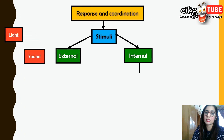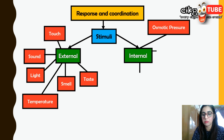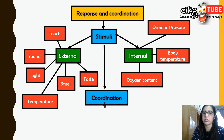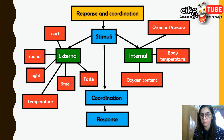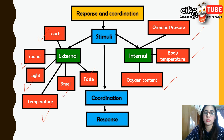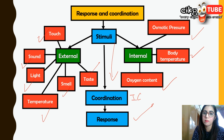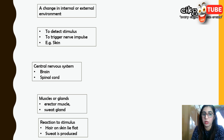Now let's look at stimuli in more detail. We have external and internal stimuli. Internal stimuli include body temperature, osmotic pressure, and oxygen content. External stimuli include touch, sound, light, environmental temperature, smell, and taste. These will lead to coordination in the integration center, which then produces the appropriate response. Humans and animals respond to both external and internal stimuli by coordinating functions throughout the body.